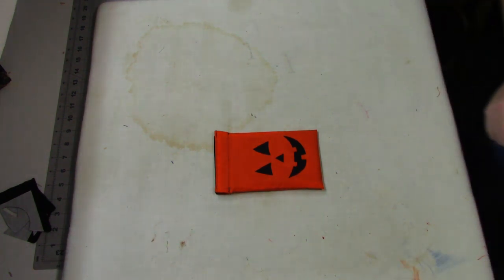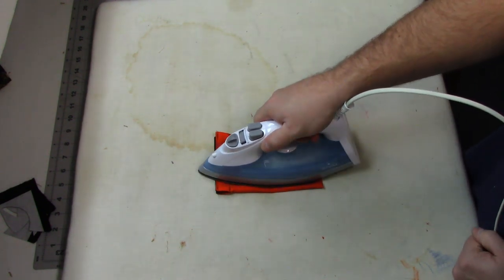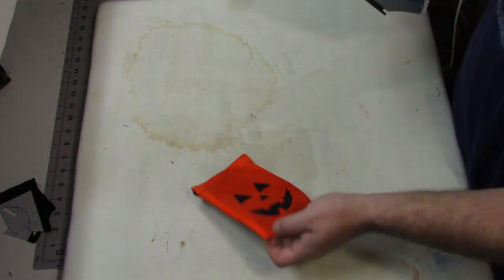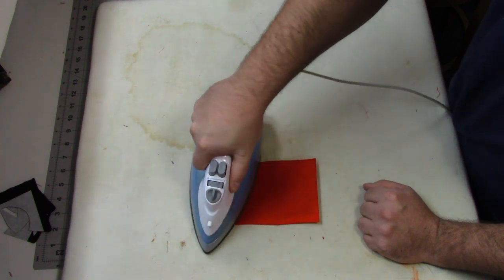All right, so that looks good to me. You're going to grab your hot iron. I'm going to lay it over here for 8 to 10 seconds. Then I'm just going to flip it around to the back. And just to make sure it's nice and stuck, I like to press it from the back too.